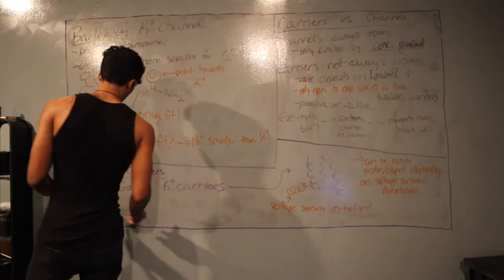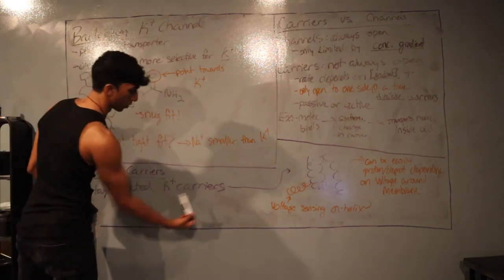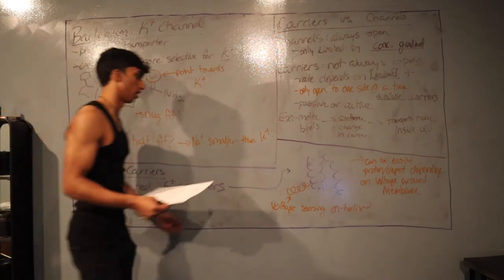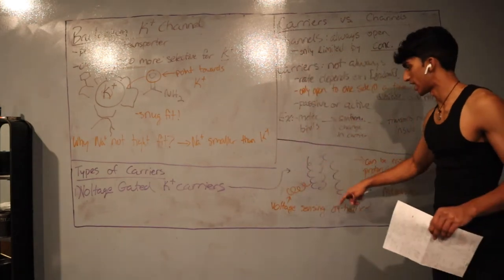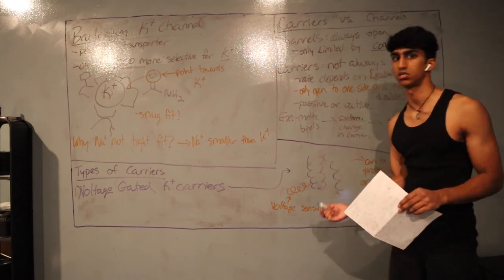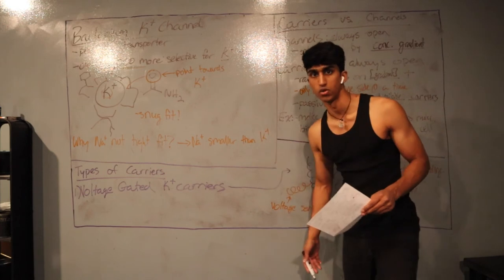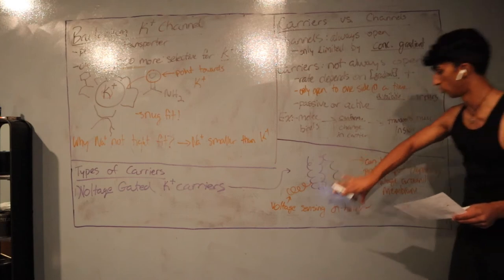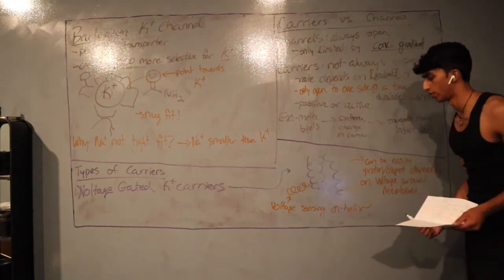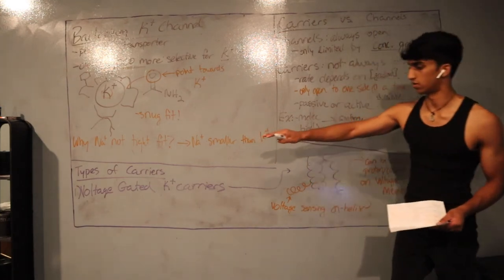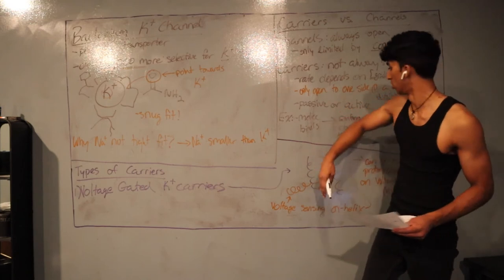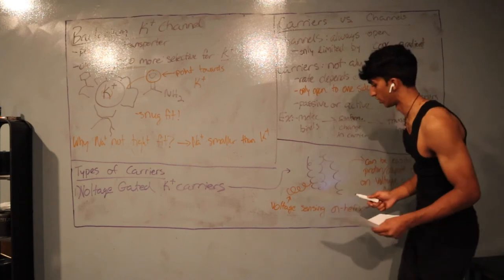An example of carriers is voltage-gated potassium carriers. The orange voltage-sensing alpha helix is key — it can be protonated or deprotonated depending on the membrane voltage. When protonated, the gate is up (closed); when deprotonated, a conformational change swings the gate down and allows potassium ions to enter. The opening and closing is entirely voltage-dependent.